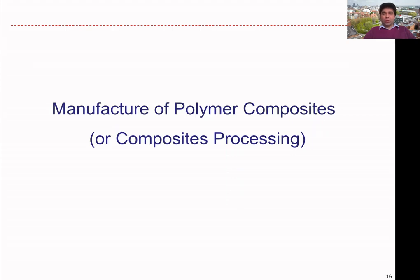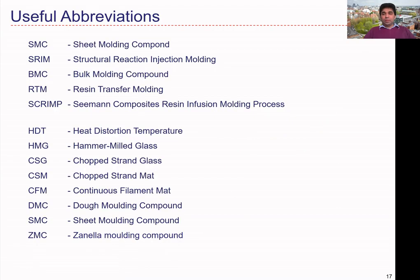Let's make a start to discuss the manufacturing processes for polymeric composites. There's a list of abbreviated terms used within this lecture content that I might be using throughout. It would be good to have some understanding of these abbreviated terms — for example, SMC refers to sheet molding compound. Please go through this list before we begin.